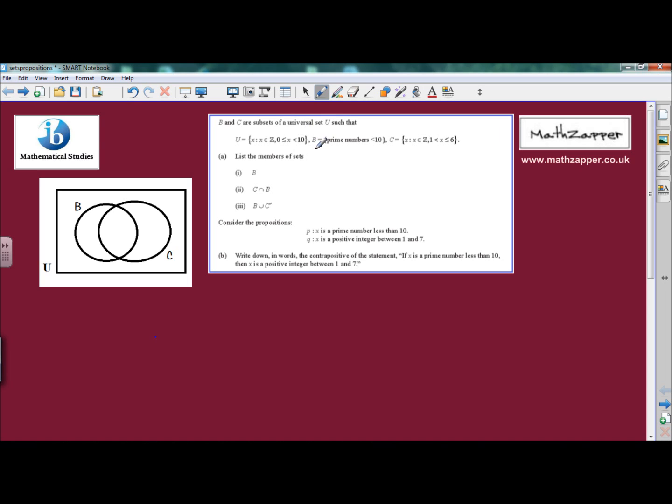Inside the universal set there will be a set B which contains all the prime numbers less than 10. Also there's a set C which are integers between 1 and 6 but not including 1.